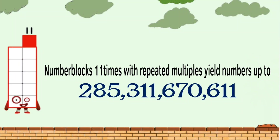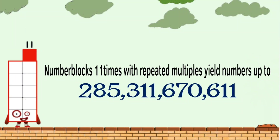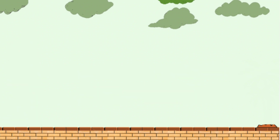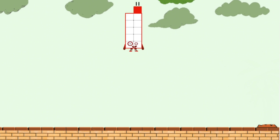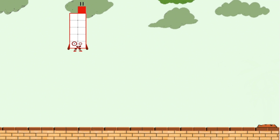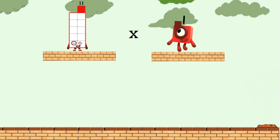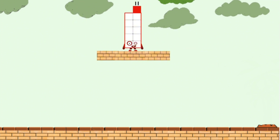Number blocks 11 times, with repeated multiples yield numbers up to 285,311,670,611. 11 times 1 equals 11.